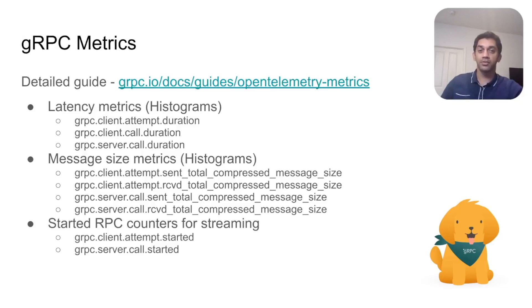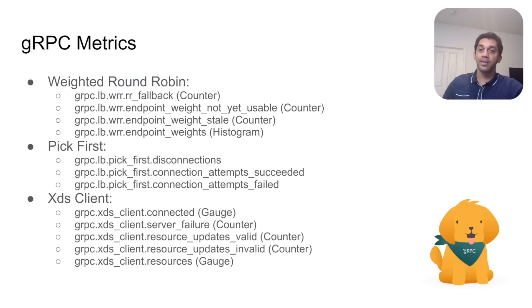We've got RPC metrics right now that give us latencies, message size metrics, and started RPC counters for streaming. Those familiar with gRPC would notice that the metrics shown here have been heavily influenced by gRPC's OpenCensus plugin, the predecessor to OpenTelemetry. But now we've improved our metric system to be able to emit metrics from load balancing policies such as weighted round robin and pick first, and also from components like the XDS client — something we did not have in our OpenCensus plugin.